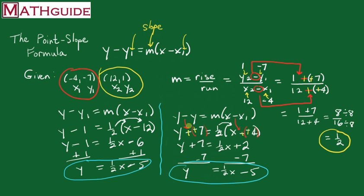So that's it. We use the point-slope formula, given two points, and now we have the equation of a line.